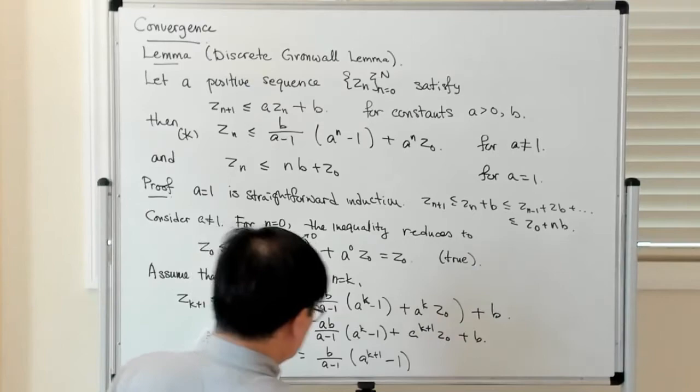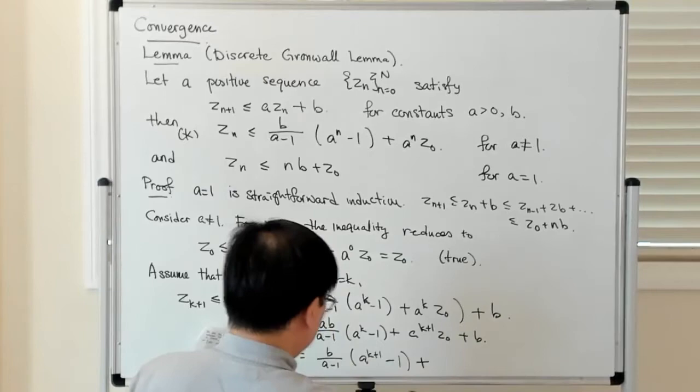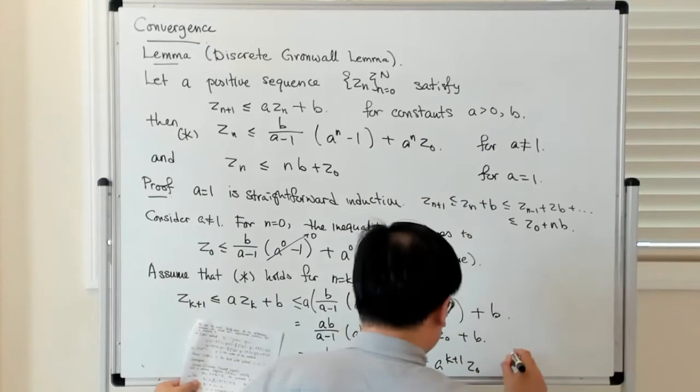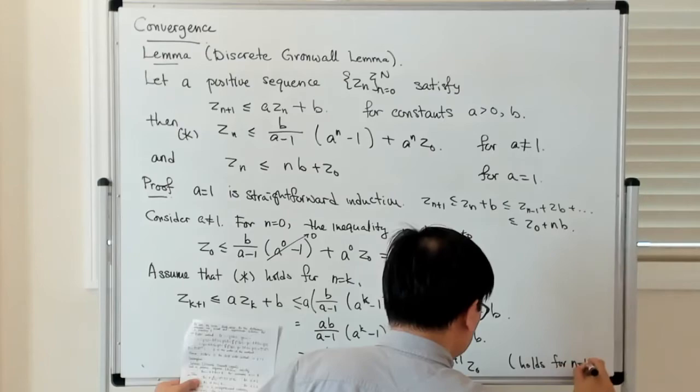This term here plus B is this term here, plus this is A^{k+1} Z_0. So this holds for n equals k+1.